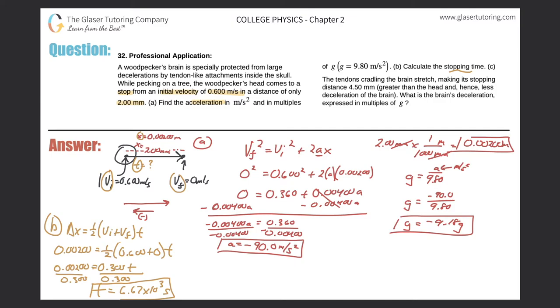Last but not least, let's take a look at letter C. So it says the tendons cradling the brain stretch, making its stopping distance 4.5 millimeters greater than the head, and hence less deceleration of the brain. What is the brain's deceleration expressed in multiples of G? Honestly, the wording of this question is a little odd. I'm going to make one assumption that basically the new stopping or the new distance in the problem from the head, now it's going to travel out to here. So this distance now that was covered, the displacement value is now going to be 4.5 millimeters.